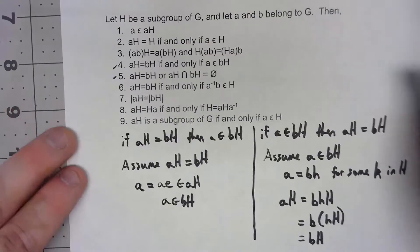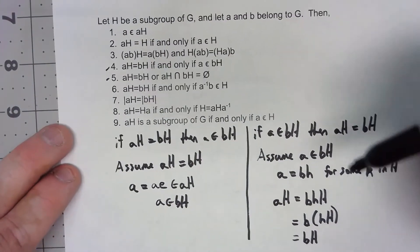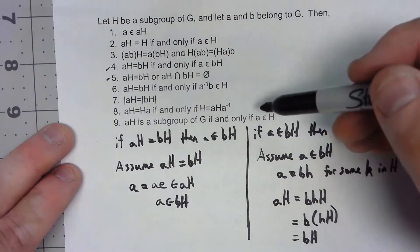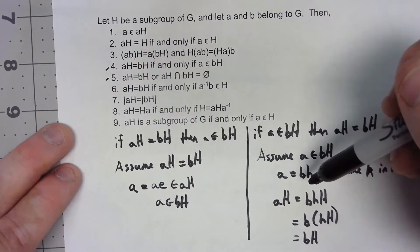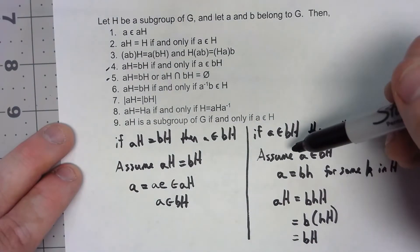Now on five, that's kind of a direct consequence of what we just did. We just showed that if there's a single element that those two things share, they have to be the same group, the same coset.